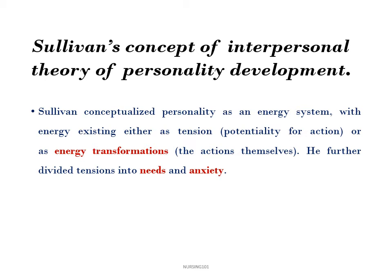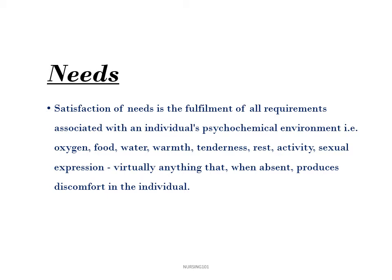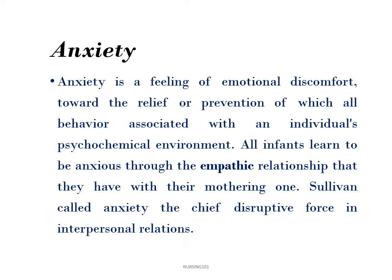Now let's talk about personality being an energy system. Sullivan conceptualized personality as an energy system with energy existing either as tension — that is, potentiality for action — or as energy transformation, that is, the actions themselves. He further divided tensions into needs and anxiety. Satisfaction of needs is the fulfillment of all requirements associated with an individual's psychochemical environment: oxygen, food, water, warmth, tenderness, rest, activity, sexual expression, or virtually anything that, when absent, produces discomfort in an individual.